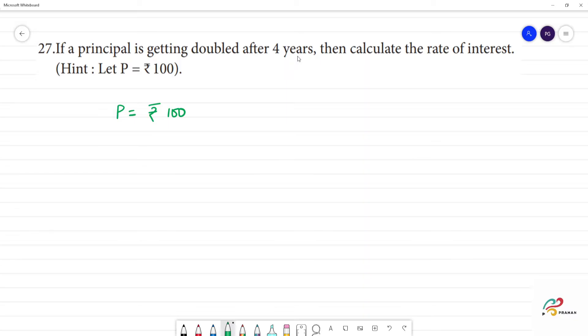So, doubled after 4 years. So, n is equal to 4. After 4 years, what do we say?